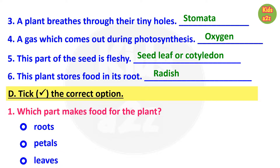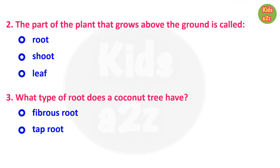For question D, kids need to choose the correct answer from the given options. Number one: which part makes food for the plant? Answer is leaves. Question two: the part of the plant that grows above the ground is called — answer is shoot. Question three: what type of root does a coconut tree have? Answer is fibrous root.